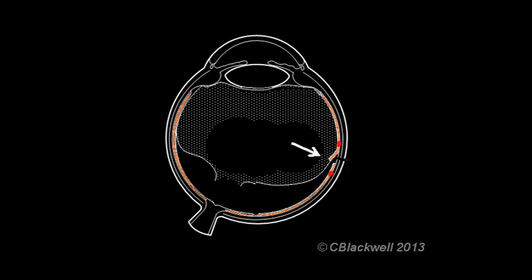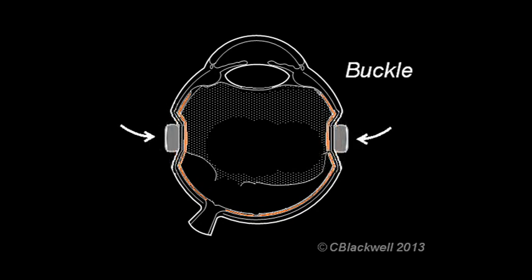In this technique, that is dealt with by putting a band or buckle around the equator of the eye, typically made of silicon. By tightening the band like a belt, it will indent the wall of the eye and relieve the vitreous traction. Success rate is over eighty percent, but it is complicated to perform and has its particular set of complications.